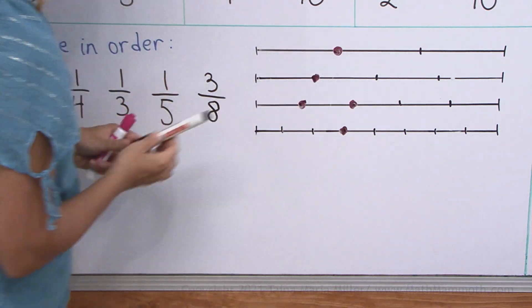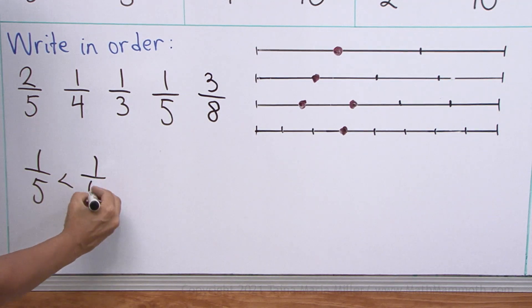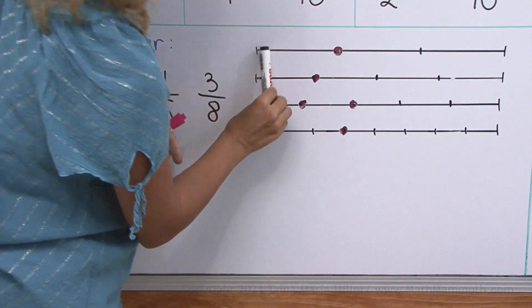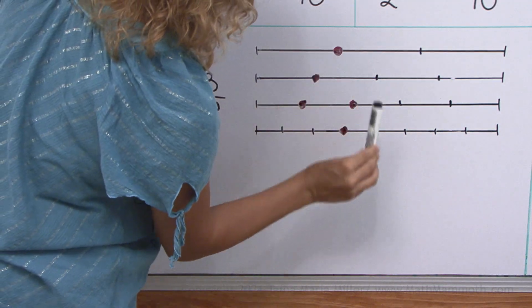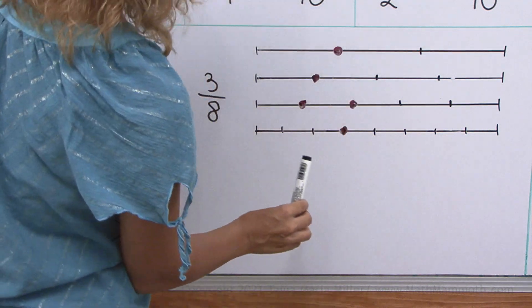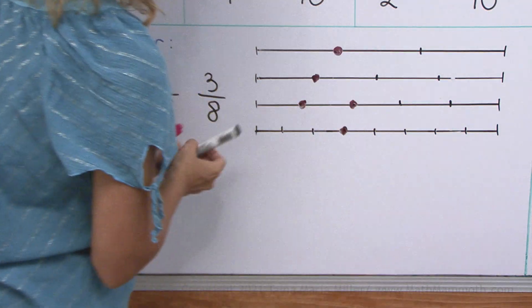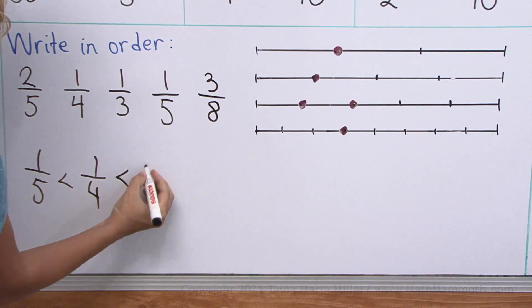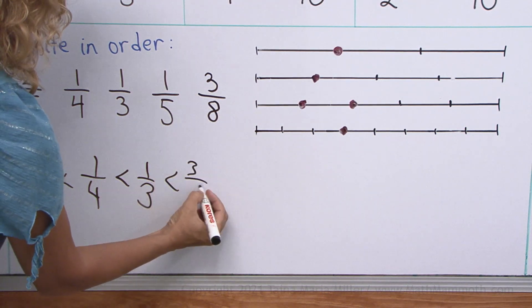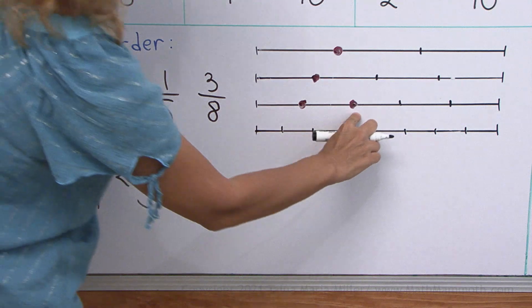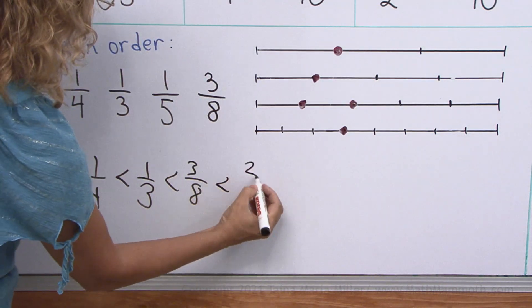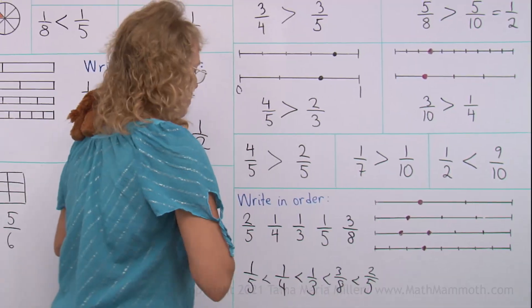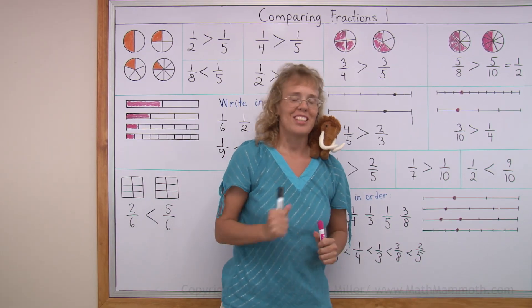And let's continue. This dot is next: one-fourth. And then we have these two real close together. I think it is one-third, though. And then comes the three-eighths. And lastly, this one: two-fifths. Okay. All done with this lesson.